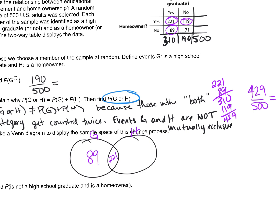Because you may have set up your circles differently than the way I did. So then what's the number for yes homeowner but not a graduate? 119.